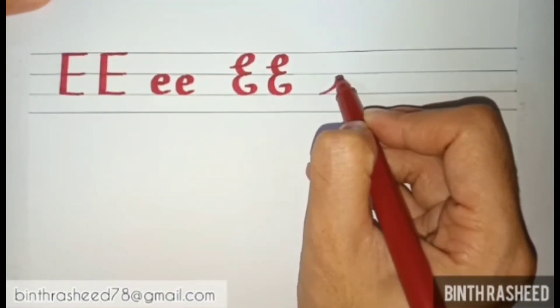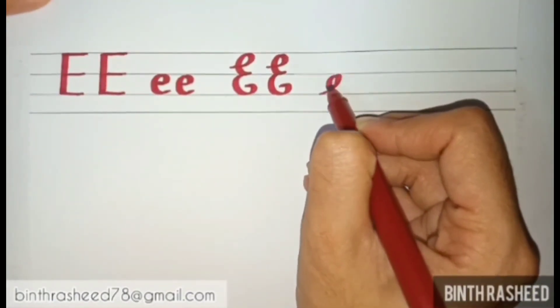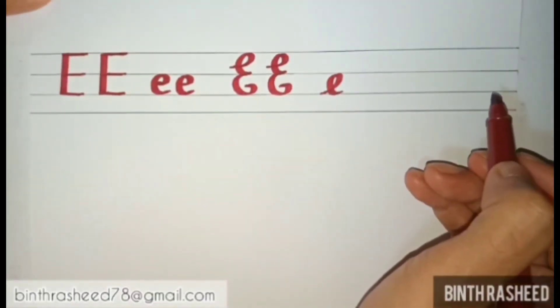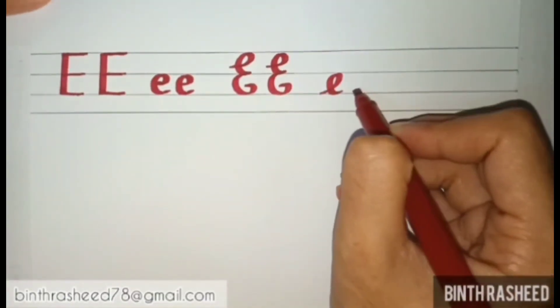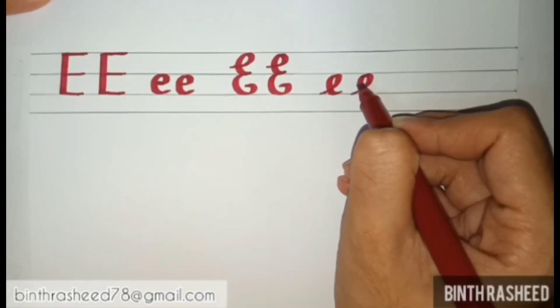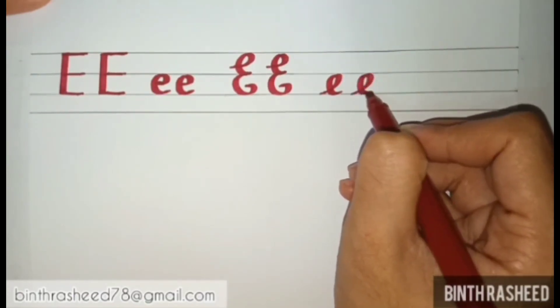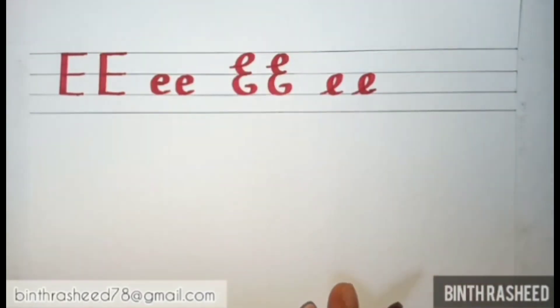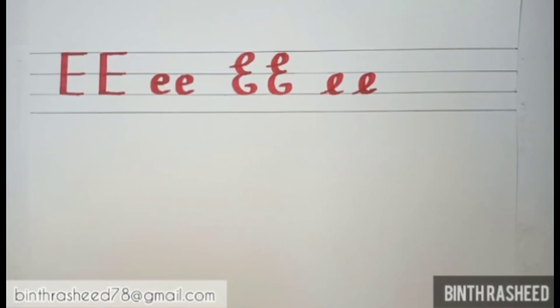And finally, cursive small e. Cursive small e is very simple — you start from the third line and draw a loop. Once more from the third line: a loop. And that's how we get our cursive small e — so those are the four forms of E.